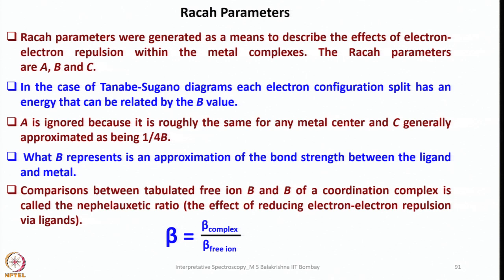A is ignored because it is roughly the same for any metal center, and C is generally approximated as being 1/4 times B. What B represents is an approximation of the bond strength between the ligand and metal. Comparisons between tabulated free ion B and B of a coordinated complex is called the nephelauxetic ratio, the effect of reducing electron-electron repulsion via ligands. That is beta equals B complex over B free ion.